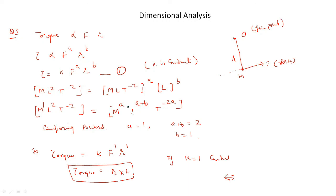Comparing powers on both sides: A = 1 and B = 1. Therefore torque = K · F^1 · R^1, which means torque = R × F, or torque equals distance times force. Thank you.